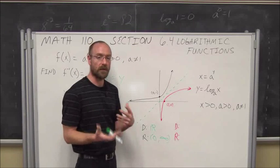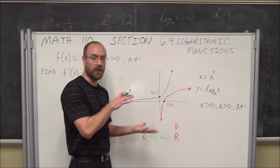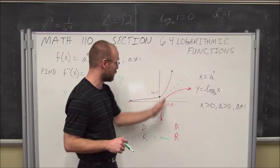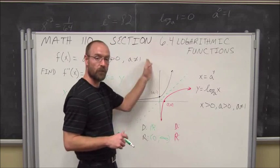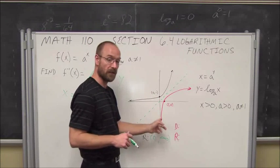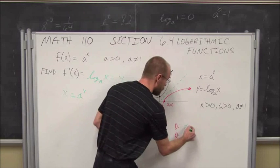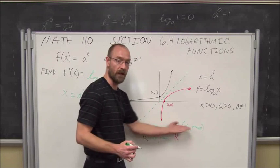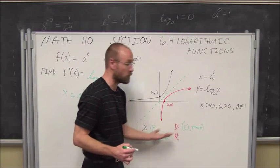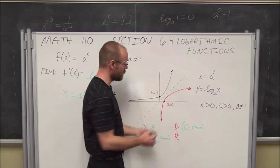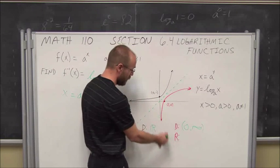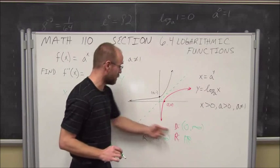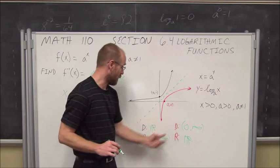If we replace x with y and y with x, we replace all the properties that go with that. The domain of a logarithmic function — we see the vertical asymptote, and there is no value of x less than or equal to 0. So the domain is from 0 to infinity, not including 0. The range of the inverse is the domain of the inverse function. The range of the logarithmic function goes down to negative infinity and continues up to positive infinity — it is all real numbers. Domain and range are switched between the two inverse functions.